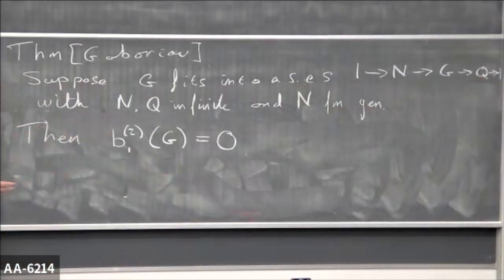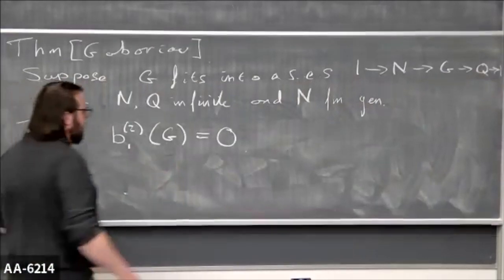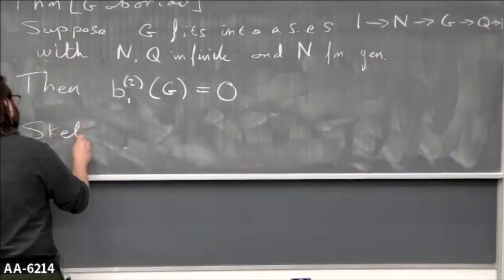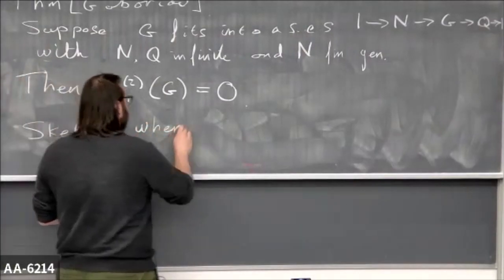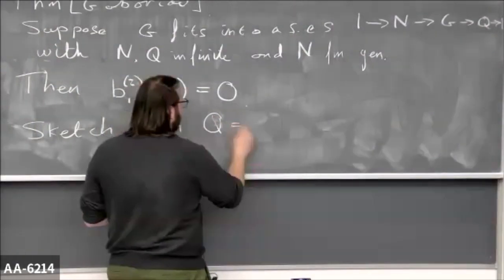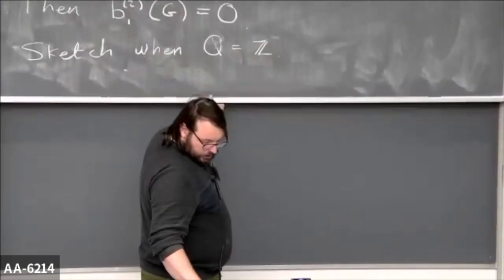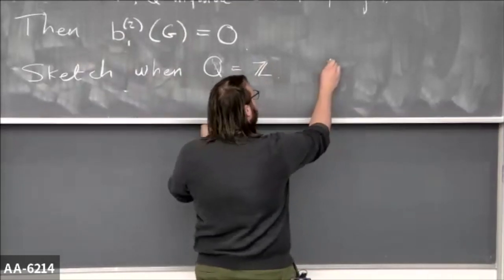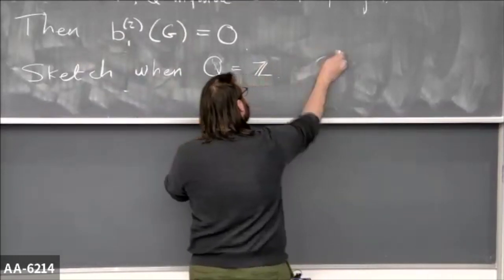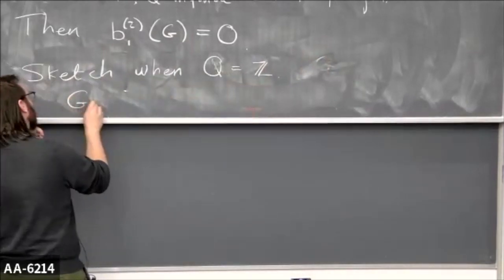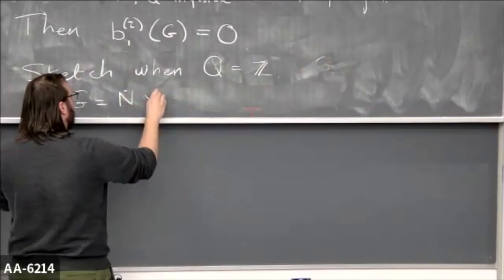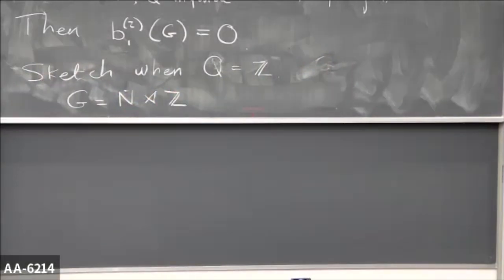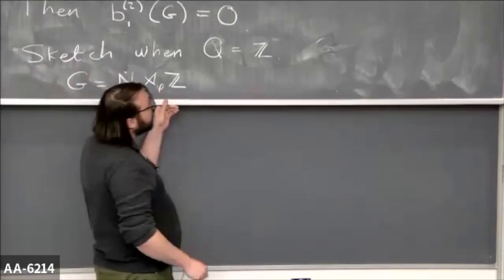I think this is a very powerful and very cool theorem. Let me give you a sketch of the proof for when Q is the integers — meaning this short exact sequence splits, so G is actually a semi-direct product of this kernel by some automorphism. I want to look at the L² Betti number. I've given you one way of computing things, so we'd better use that.